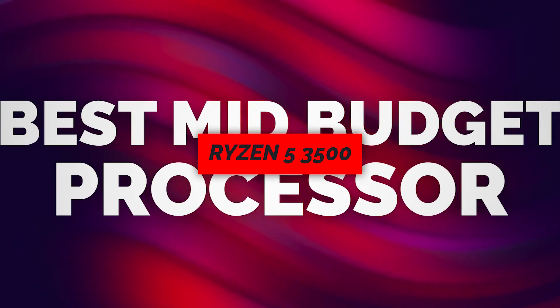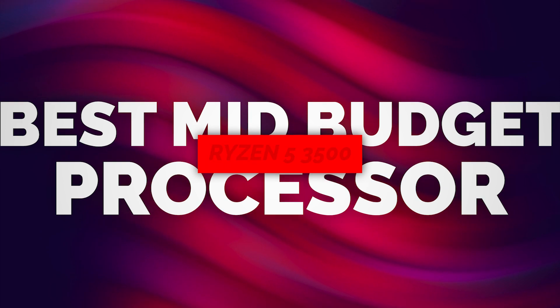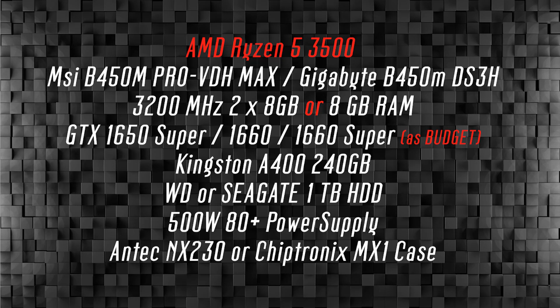If you have a smaller budget, you can go with the Ryzen 7 2700X at about 20,000 Rs. — a second generation processor. Next is the best medium budget processor: Ryzen 5 3500. The 3500 has 6 cores and 6 threads, based on 3rd generation Ryzen 7nm. It is the best medium budget processor for a 45,000 to 50,000 Rs. range PC.